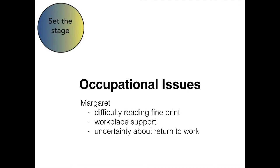In the book chapter, the example I give is someone called Margaret, and the occupational issues her and the therapist have identified are: difficulty reading fine print, workplace support in terms of her condition and being able to be at work, and some uncertainty about whether or not she'll return to work. One important thing about this previous stage is making sure that we document them as occupational issues, not as poor vision, for example. Poor vision is a component level thing. Occupational therapists can't fix vision, but we can help somebody who's having difficulty reading fine print. So it's important that occupational issues are named and labelled as such.